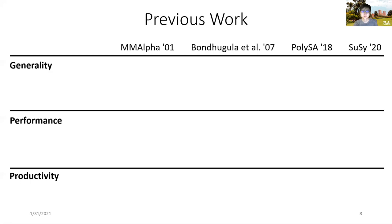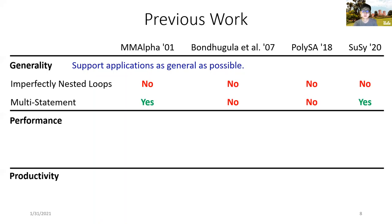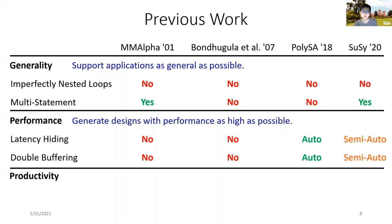Generality-wise, the compilation framework should be able to handle applications as general as possible. One such example is to support applications with imperfectly nested loops and multiple statements. Performance-wise, the performance of the generated systolic arrays should match manual designs as much as possible. To achieve such a goal, the framework should cover as many hardware optimizations as possible.